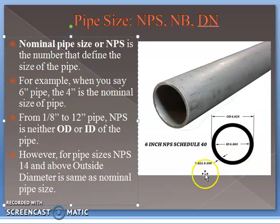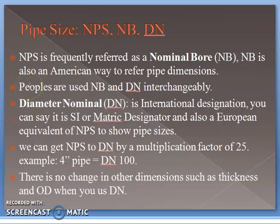The wall thickness is 0.280 inches. For the NPS system above 14 inches, the outside diameter is the same as the nominal pipe size. NPS is frequently referred to as Nominal Bore, which is also an American way to refer to pipe dimensions. NB and DN can be used interchangeably. DN — Diameter Nominal — is the international designation, equivalent to the SI or metric designator and the European equivalent of NPS.